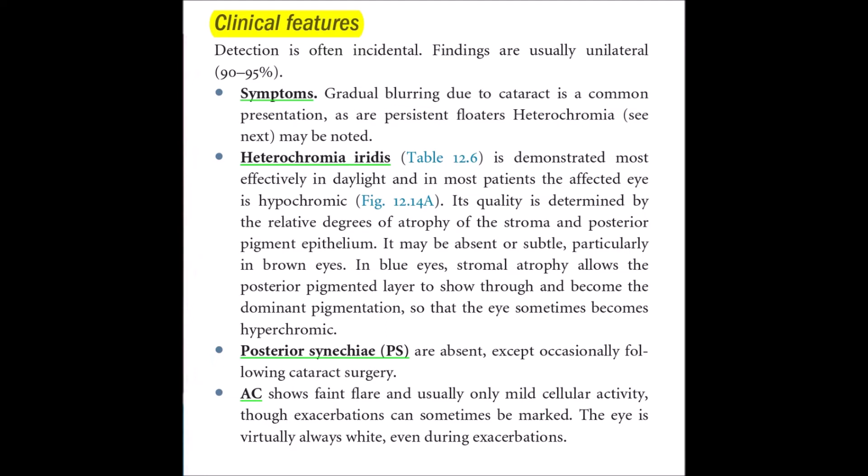In blue eyes, stromal atrophy allows the posterior pigmented layer to show through and become the dominant pigmentation, so the eye sometimes becomes hypochromic. Posterior synechiae, a characteristic of uveitis, are absent here except occasionally following cataract surgery. The anterior chamber shows faint flare and usually only mild cellular activity, though exacerbations can sometimes be marked, while the eye is virtually always white even during the exacerbation period.